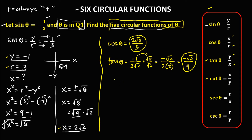For cotangent theta: cotangent θ = x over y, so x is 2√2 over y which is negative 1. Simplifying, we can rewrite this as negative 2√2. So cotangent θ = −2√2.